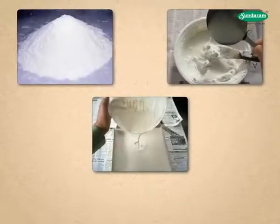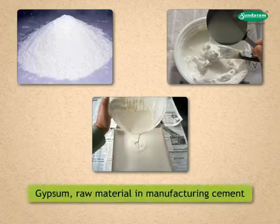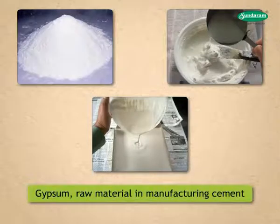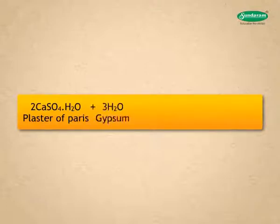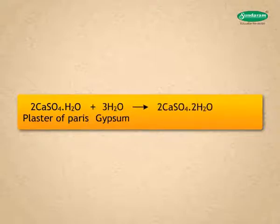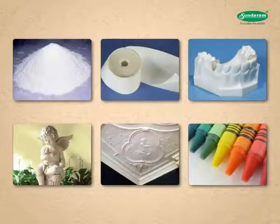→ 3CaO·Al₂O₃·6H₂O(s) + heat. Students, do you know that plaster of Paris when mixed with water sets quickly into a hard mass known as gypsum, which is the raw material in manufacturing cement? 2CaSO₄·H₂O + 3H₂O → 2CaSO₄·2H₂O + heat.